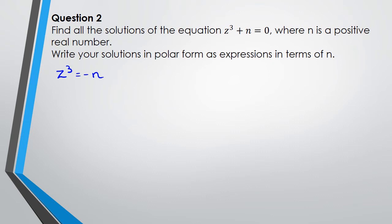Now just plotting -n, because n is a real number, -n is going to be here somewhere, which means z³ could be written as n cis 180 degrees, because n is the modulus, and so that's n right there, and the argument is 180 degrees.